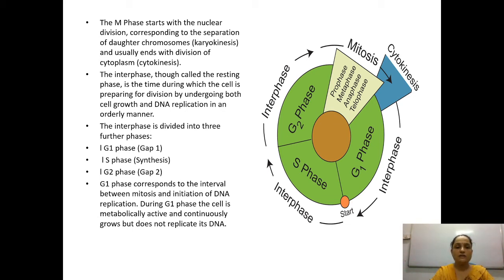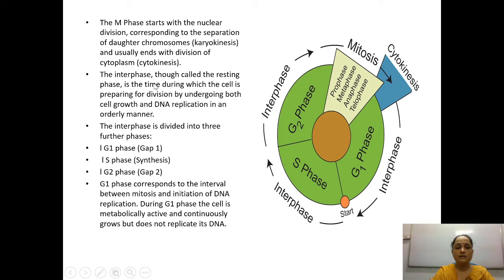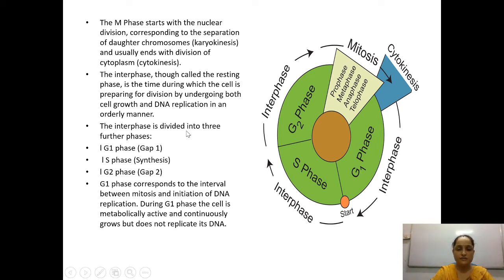The interphase is also called the resting phase. It is the time during which the cell is preparing for division. As mentioned, of the 24 hours required for one cell cycle in human cells, 23 hours are in the preparatory phase and only one hour is for actual division. During interphase, the cell grows — cytoplasm increases and DNA replicates — in an orderly manner.